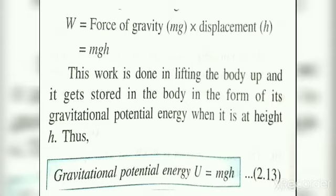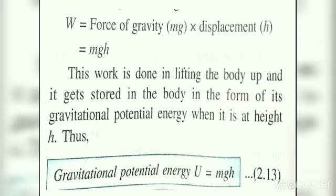If we increase the height, the gravitational potential energy increases. For example, with mass = 1 kg, g = 10 m/s², and h = 2 m: GPE = 1 × 10 × 2 = 20 J. Increasing h to 4 m gives GPE = 1 × 10 × 4 = 40 J. So increasing height increases GPE, and decreasing height decreases GPE.